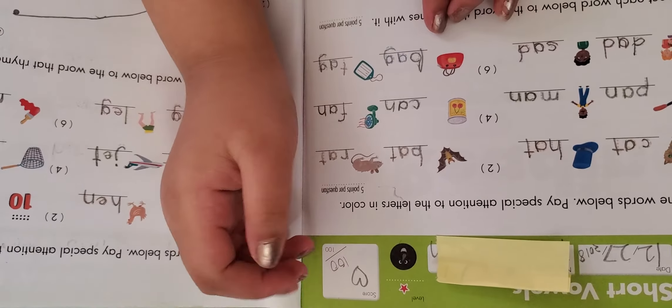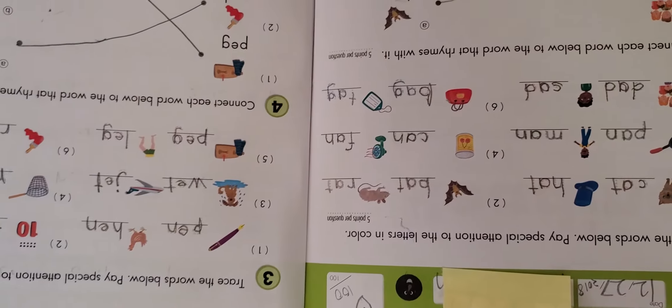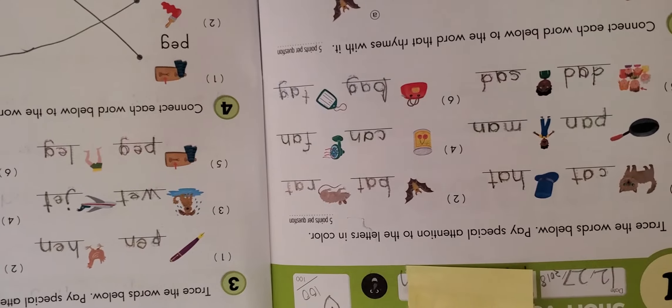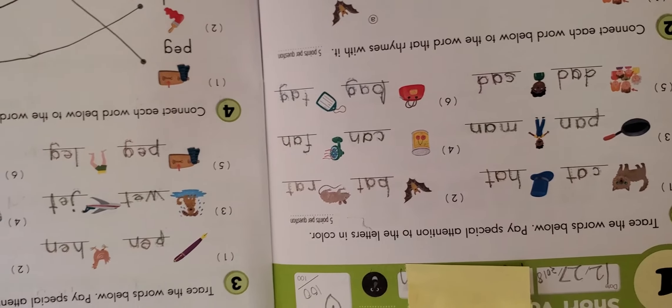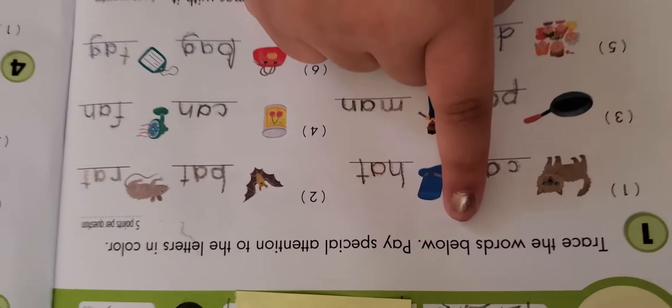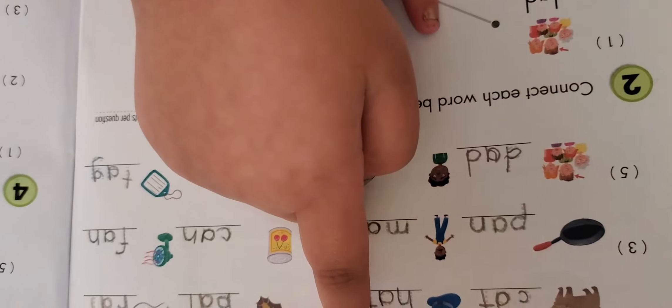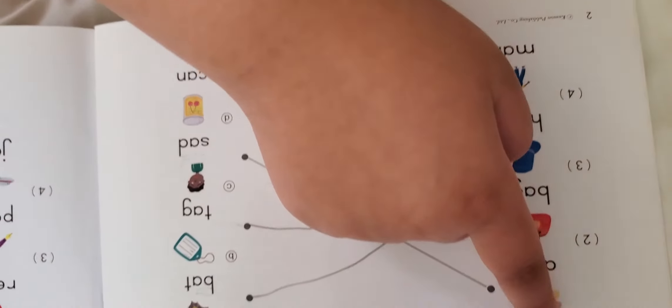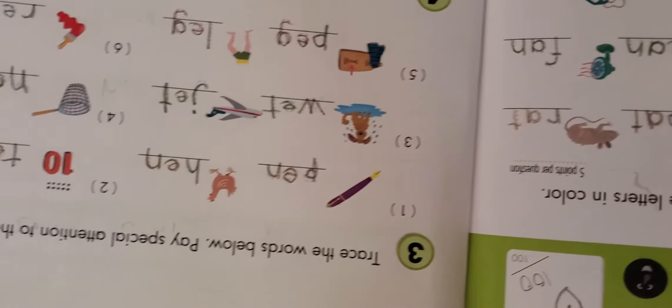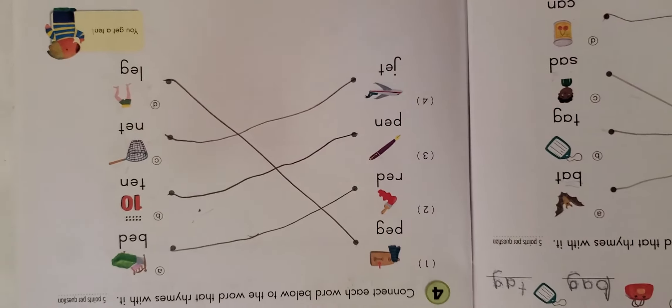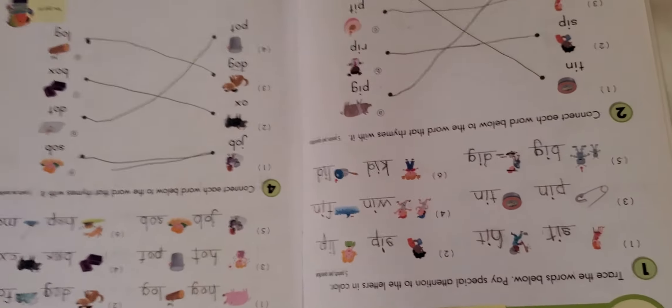The circle means one. And then when you're in standard level, I think, you see a triangle, that's standard level. And when you see a square, that means you're advanced level. So it has trace the words below. Pay special attention to the letters in color. So I already traced them all. And this one says, connect each word below to the word that rhymes with it. So you have to take your pencil and drag it.